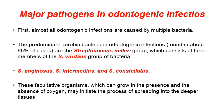Maxillofacial infections are not a one-man show — they need a team of multiple bacteria. The predominant aerobic bacteria, found in about 65% of cases, are the Streptococcus milleri group, consisting of three members of the Streptococcus viridans group: Streptococcus anginosus, Streptococcus intermedius, and Streptococcus constellatus. These are facultative organisms that can grow in the presence and absence of oxygen, allowing them to spread into deeper tissues by shifting from aerobic to anaerobic metabolism.